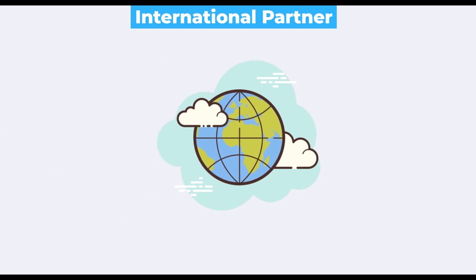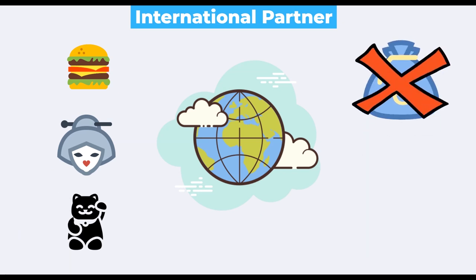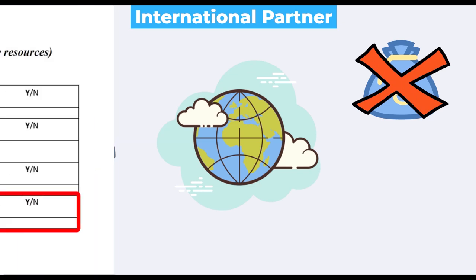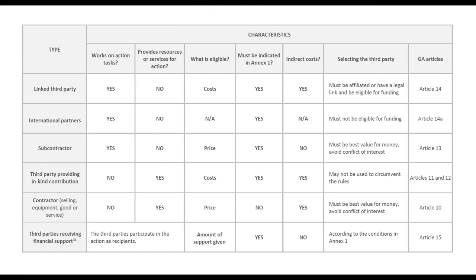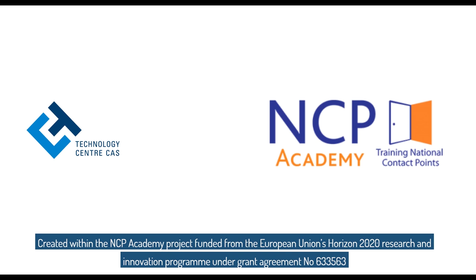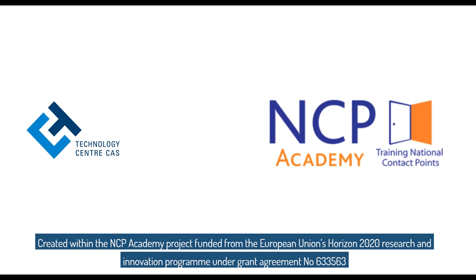The last, and not that common, third party in Horizon 2020 projects may be international partners who perform their action tasks without receiving EU funding. They may be partners from third countries, such as the United States, Japan, or China. They need to fund their project activities by themselves, which also means they do not need to report their finances to the Commission. Still, their contribution, including the expected budget, must be foreseen in Annexes 1 and 2 of the grant agreement. The table summarizes the main features of third party participation in Horizon 2020 projects.